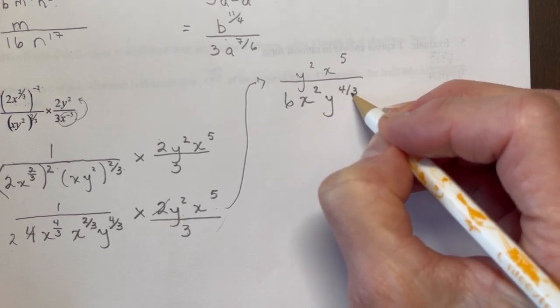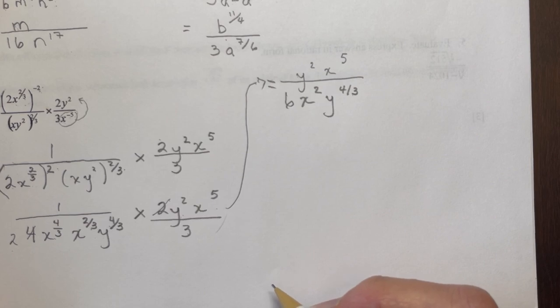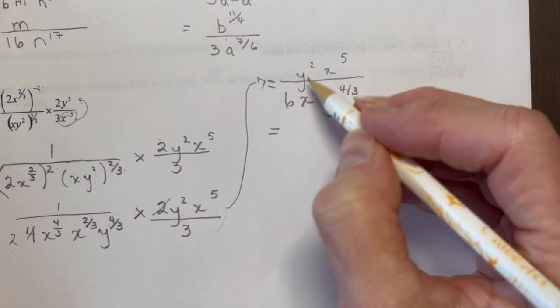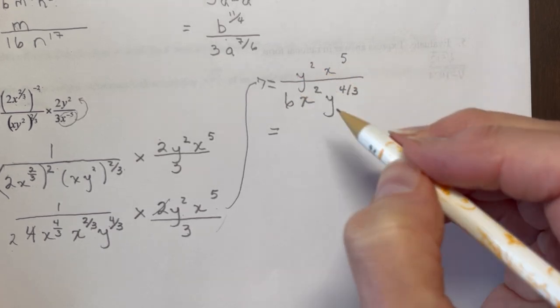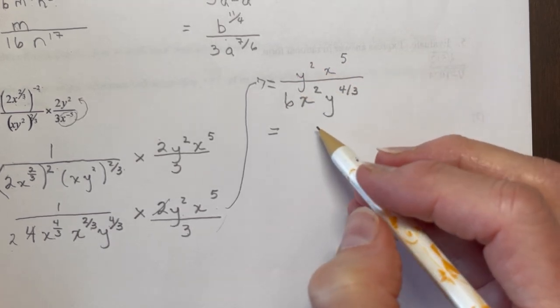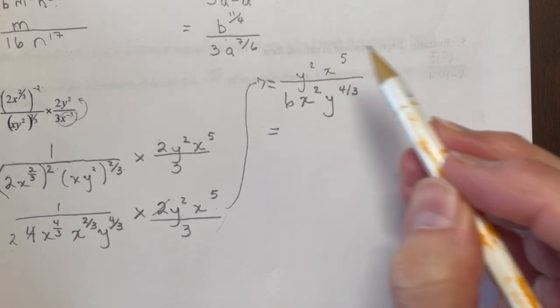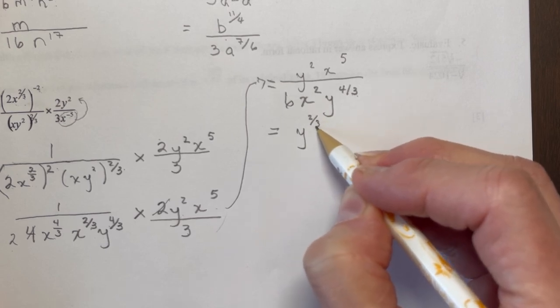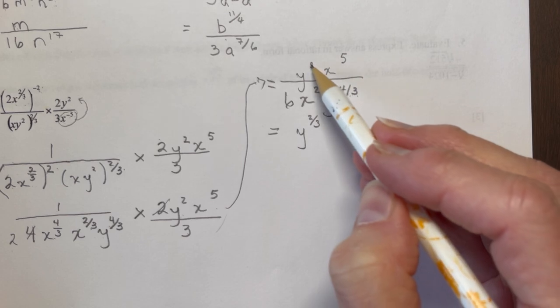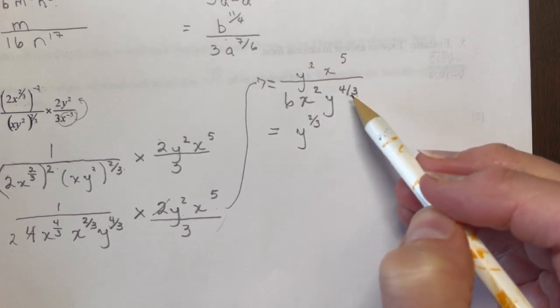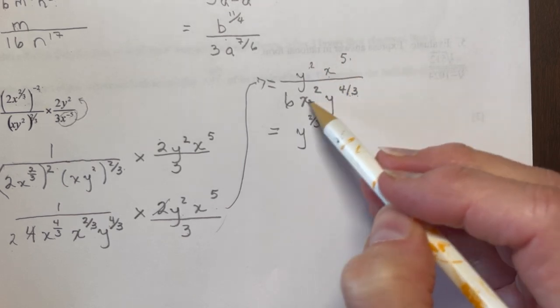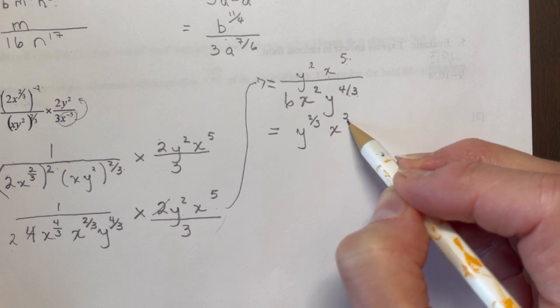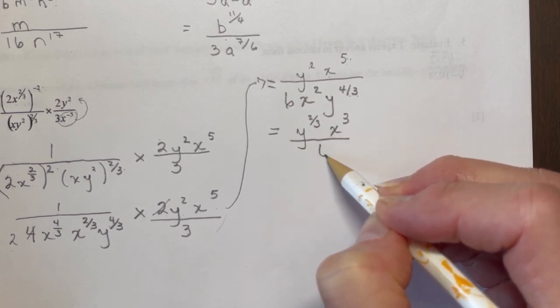Okay, now we're getting somewhere. It's getting nice and neat. Don't forget your equal signs. So now I'm going to simplify my variables, because I don't want to have x squareds and y squareds in both places. So I have y squared, so that's six-thirds minus four-thirds is going to give me y to the two-thirds. So I'm just subtracting, because this is in the denominator. This was six, this was four over three. And I have x to the fifth x squared. So five minus two is going to be cubed, x cubed. And that's all over six.